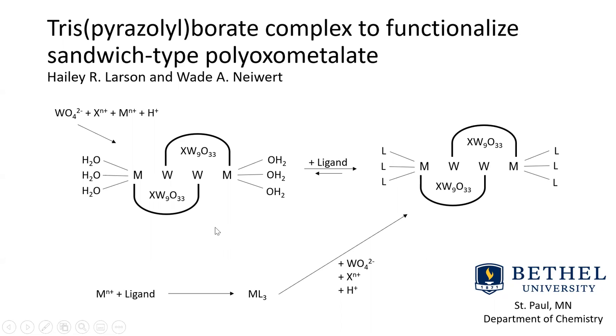One class of POMs is the Keggin sandwiches, which are comprised of two XW9O33 groups sandwiching a range of metal cations. Our focus has been on the least studied of the four, the B-beta type.